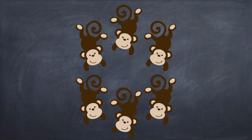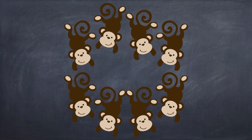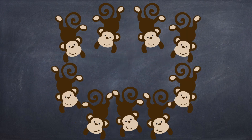Let's try another one. How many monkeys do you count? Seven. There are seven monkeys in this group. Let's try another one. Count the monkeys. Remember, you can always stop to count them if you need more time. How many monkeys are there? Eight. There are eight monkeys in this group. Now our last group of monkeys. How many monkeys do you see? Nine. There are nine monkeys all together.